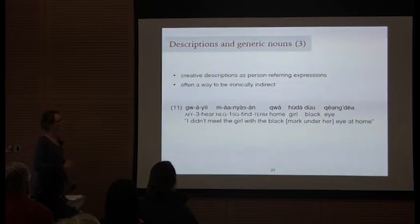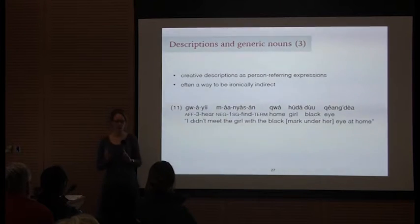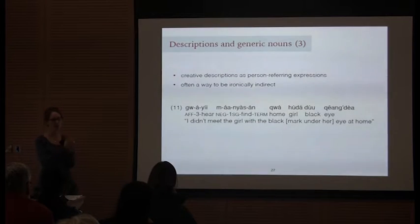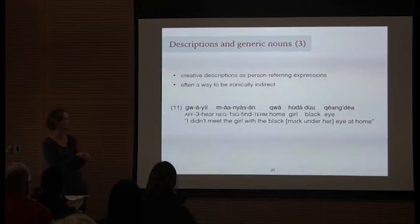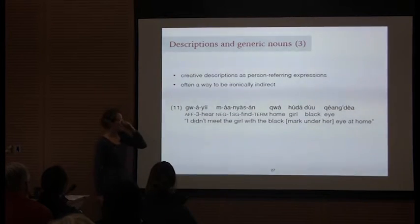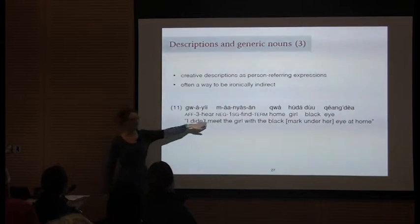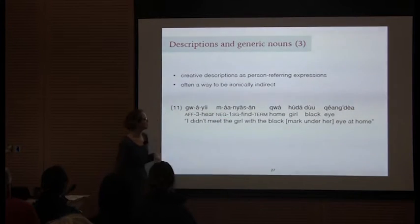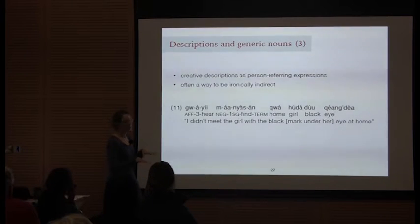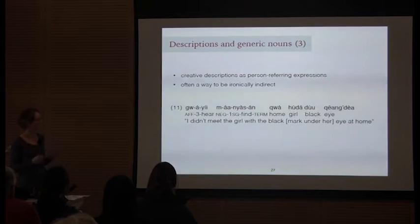The nice thing about descriptions is that they allow you to be creative. Often descriptions are used as a way to be ironically indirect. For example, two women were talking, and one had expected the other to bring her some soap the previous week but she had failed to do this. The woman who was expecting the soap said 'I didn't meet the girl with the black mark under her eye at my home' — her addressee has quite a visible dark-coloured birthmark under her eye. So she's obviously referring to her addressee, but does it indirectly rather than saying 'you' or using her name, making a pointed jibe by coming up with this creative way of referring to her. We can all think of examples in English too where we use this kind of ironic indirectness.